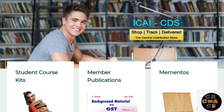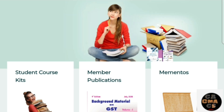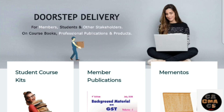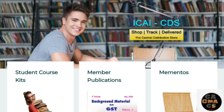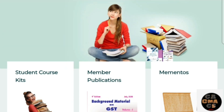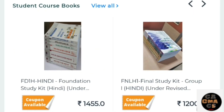For Foundation students, with this coupon they can order at free of cost. For Inter and Final students, with one coupon they can order ICAI Books at free of cost, and with the second coupon they get only a concession in the traveling charges.